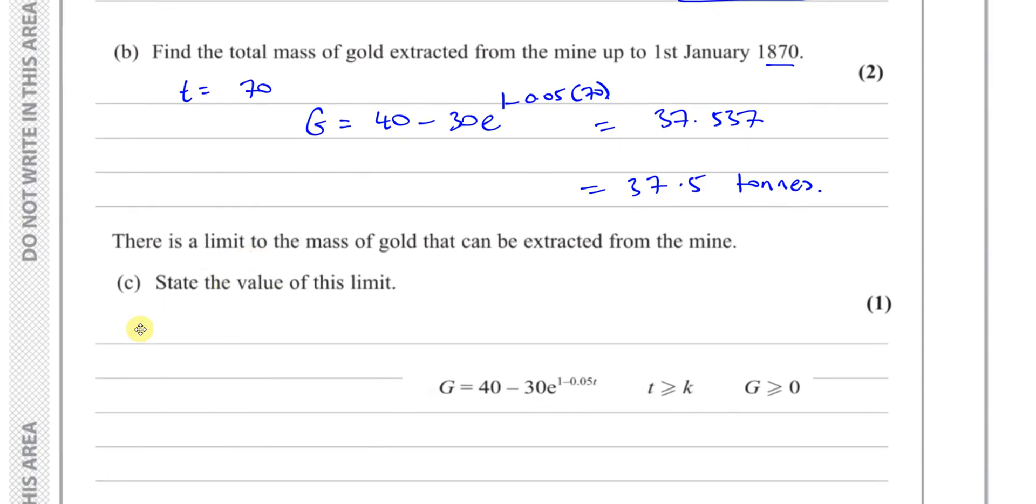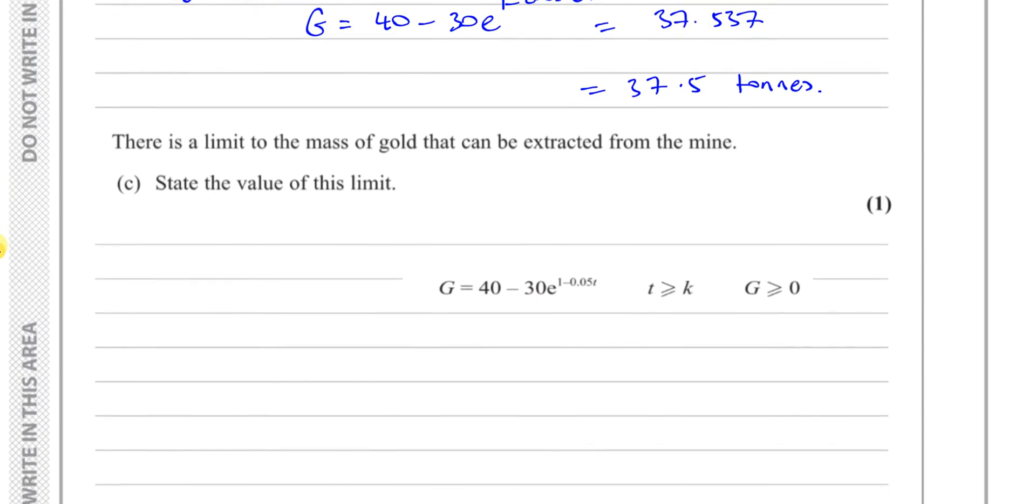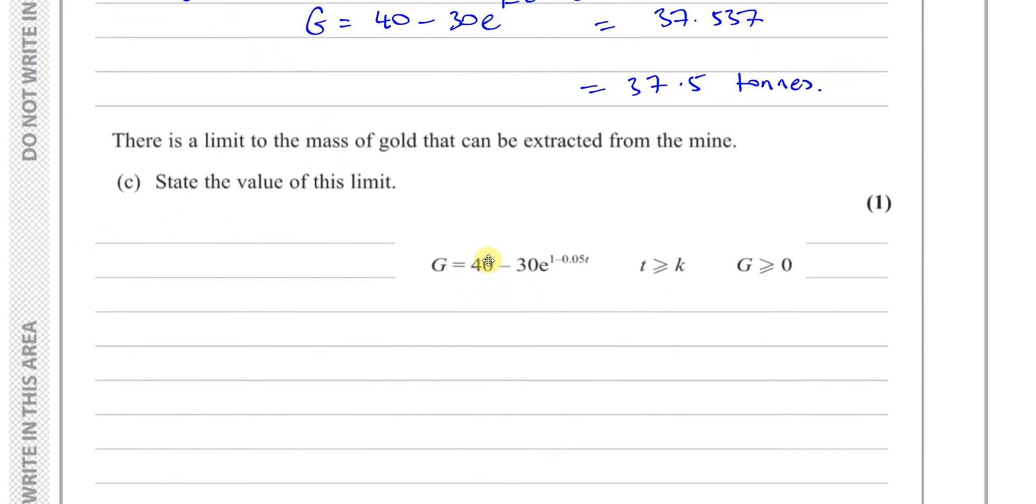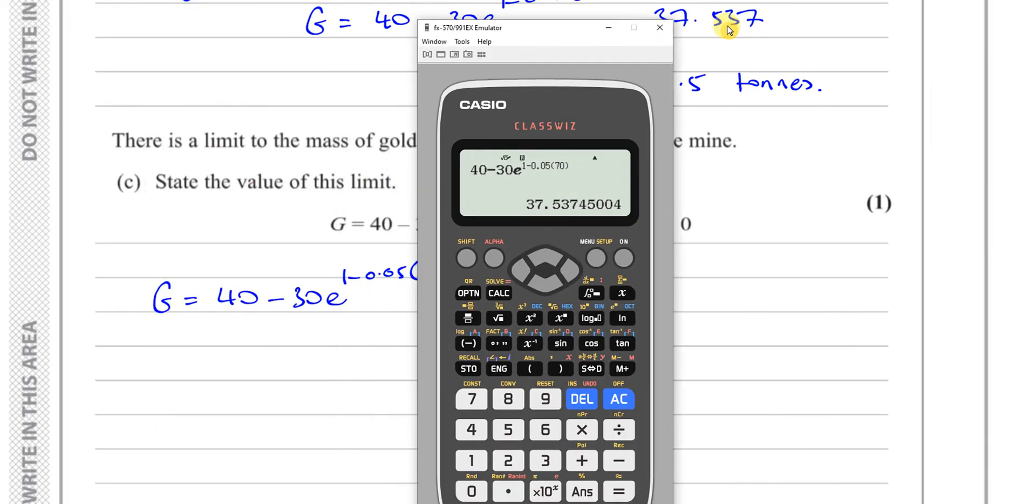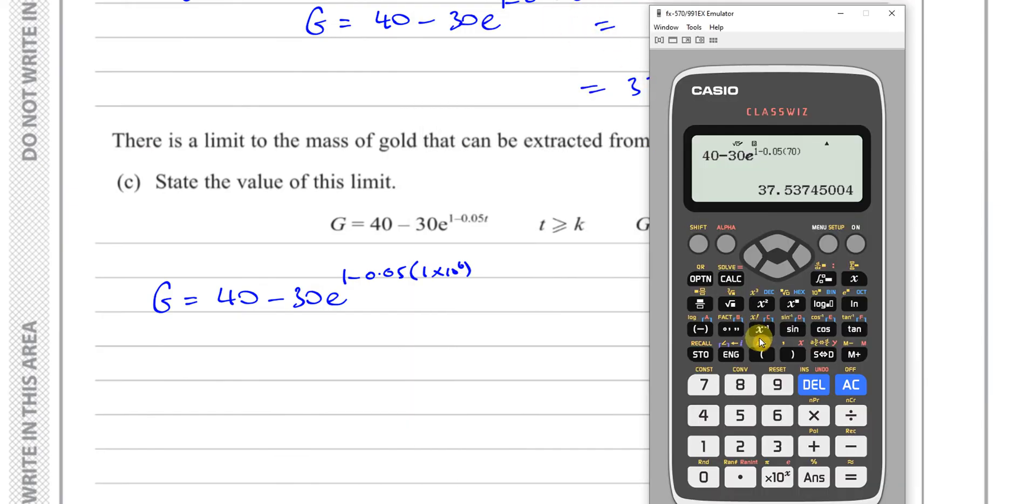Now we've got part C. It says there is a limit to the mass of gold that can be extracted from the mine. State the value of this limit. So we have here the model, the equation. The simplest way to answer a question like this, it's only one mark. All you really have to do is take a very big number, like for example 1 million or something like that, and replace t by that number and see what it gives you. And that should give you the actual limit.